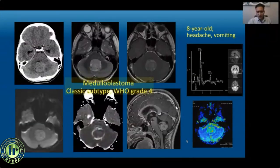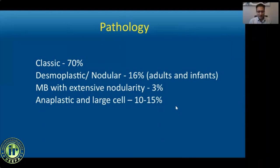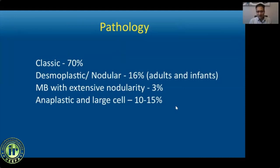Traditionally, medulloblastomas have been classified by pathology. The classic subtype is most common at about 70 percent of cases. The second most common is desmoplastic or nodular, accounting for about 15 percent, and it is the most common subtype in adults. The anaplastic or large-cell subtype accounts for about 10 to 15 percent of cases and has the worst prognosis.